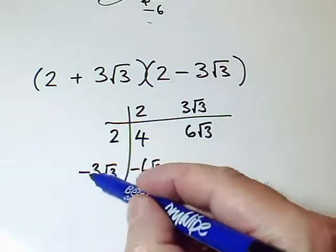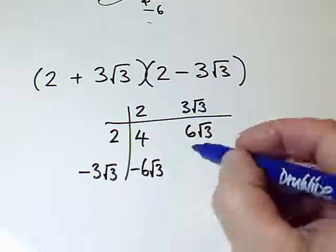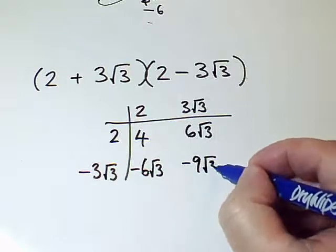And then to finish it off, minus 3 root 3 times 3 root 3. Well, I can in my head do that: minus 3 times 3 is minus 9. But then with the root 3s, I'll just write root 3 root 3.